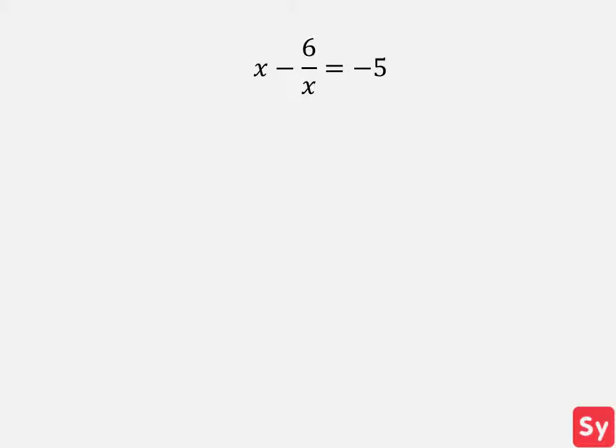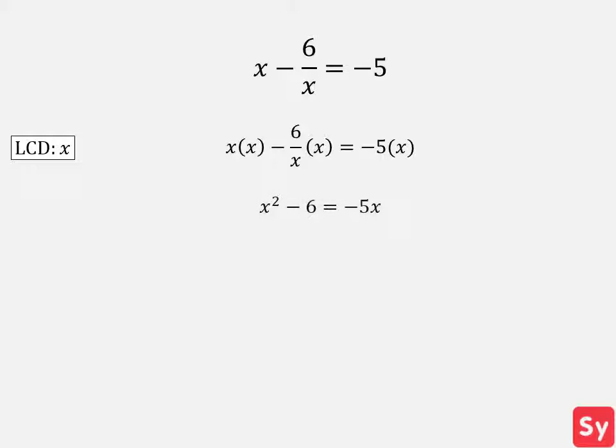Here's our first example. We have x minus 6 over x equals negative 5. First, we don't need to factor the denominator because it is just x. Next, we find the LCD. Because there is only one denominator, the LCD is it — so the LCD is x. Now we multiply both sides of the equation by x. This simplifies to x squared minus 6 equals negative 5x.